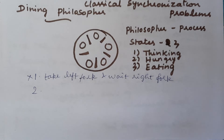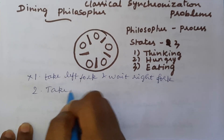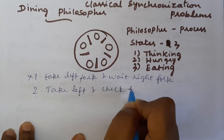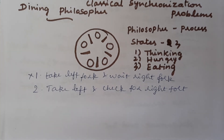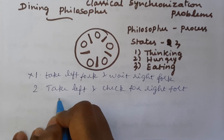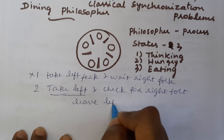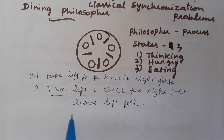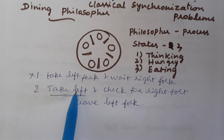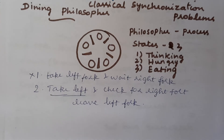The second solution: take the left fork first, then check whether the right fork is available. If it is available, use it. If it is not available, release the left fork. This allows other philosophers to use the left fork. Even so, if all philosophers take the left fork at the same time and check for the right fork, the right fork will not be available, so they will all release the left fork, and after some time repeat the same cycle.